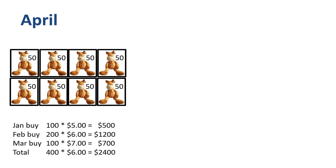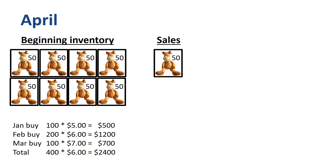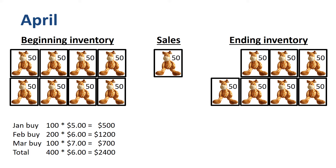Then we go to April. The ending inventory of Q1 is the beginning inventory of Q2. The first box of Toy Giraffes, 50 units, is sold in April. The ending inventory is 7 boxes of 50 units each, 350 units in total. For inventory valuation as well as determining cost of goods sold, it is important to determine what is the cost per unit for this specific box.